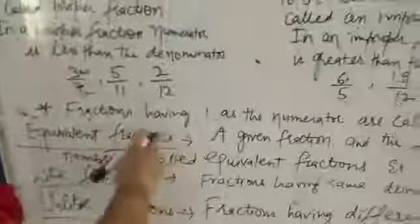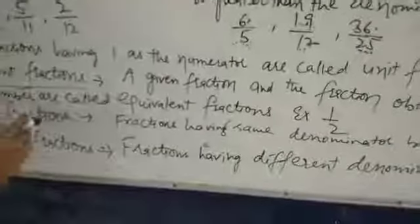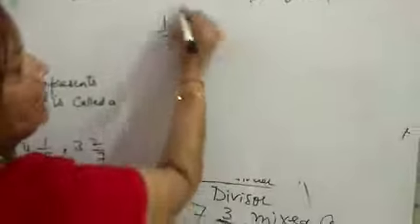Then comes equivalent fractions. A given fraction and a fraction obtained by multiplying or dividing its numerator and denominator by the same non-zero number are called equivalent fractions. The number should be non-zero — you cannot multiply or divide by 0. For example, if you have 1 upon 2, you can write the next 4 or 5 equivalent fractions for 1 upon 2.